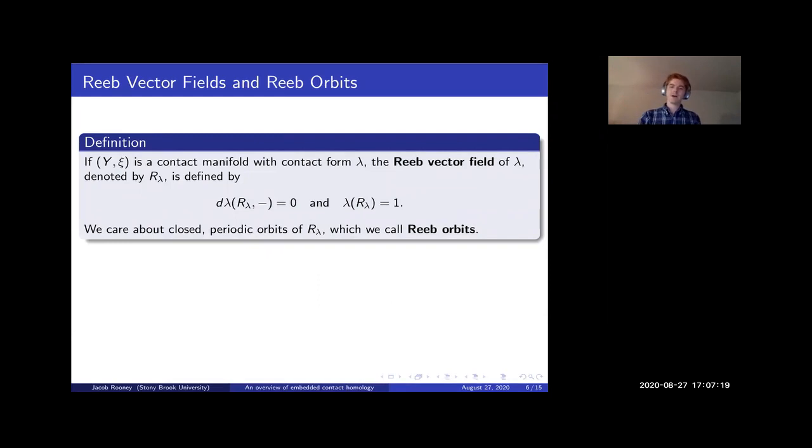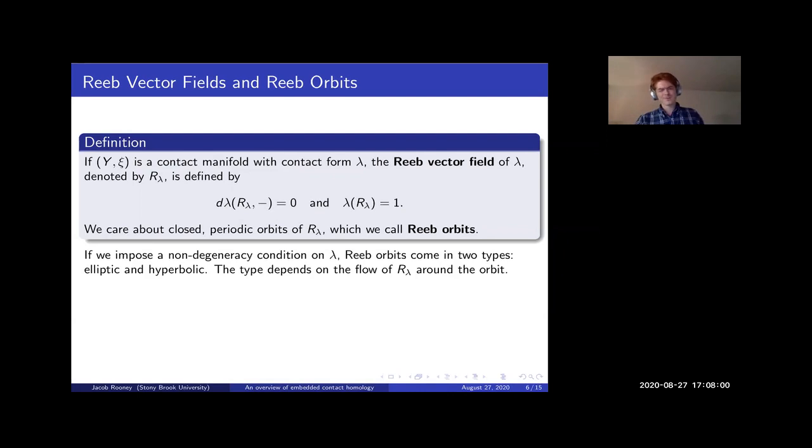So we've set the stage. Now we'll introduce the principal actors. So if we have a contact manifold, contact form lambda, the contact form gives us a special vector field on Y, which is called the Reeb vector field. And it's defined by these two equations. The first one just tells you that the Reeb vector field is a section of a certain real line bundle on Y. And the second one normalizes your choice of section to make it unique. And we care about closed periodic orbits of this vector field, which we call Reeb orbits. So if we impose a certain non-degeneracy condition on lambda, then these orbits come in two types: elliptic and hyperbolic, depending on the behavior of the flow of this vector field around the closed orbit. This distinction is not particularly important for this talk, except at one point when it is.